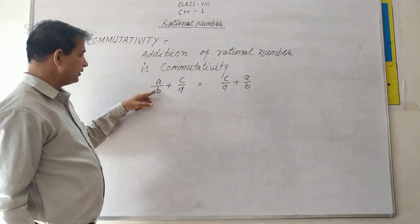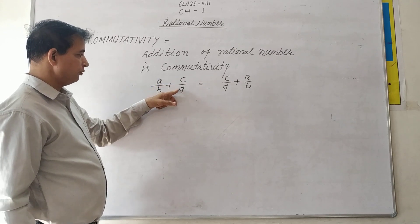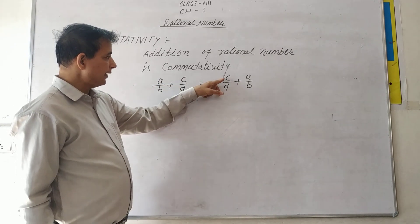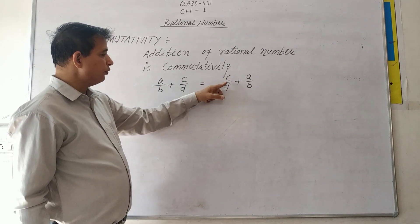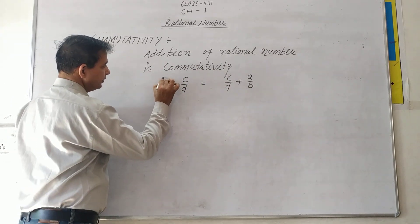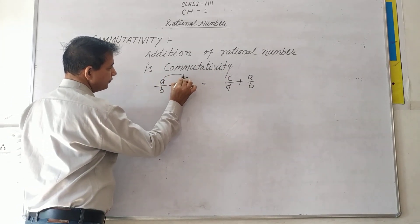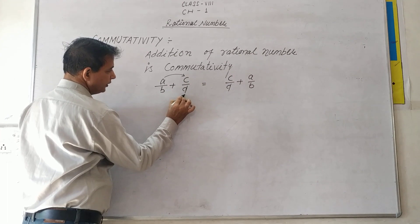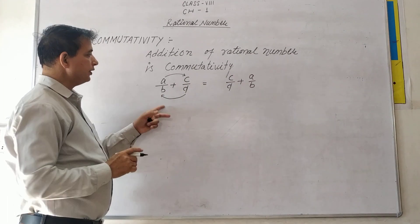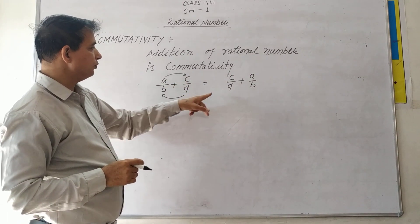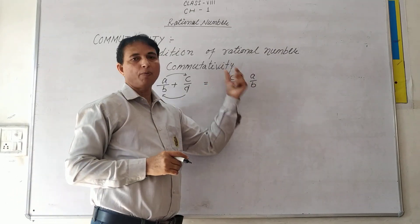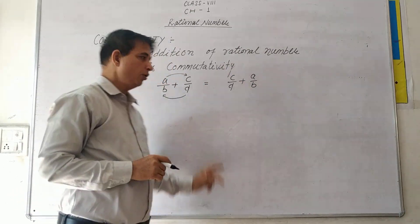Here, A upon B is a rational number and C upon D is also a rational number. On the right side, we placed C upon D first — the order has changed, meaning this part transposed to here and that part transposed there. Even after changing the order, the answer is the same. This is the commutative property.